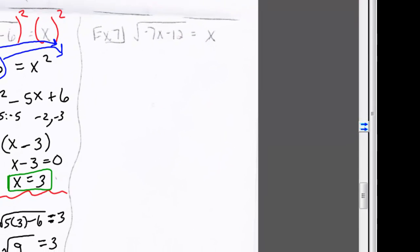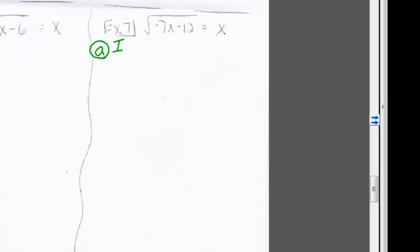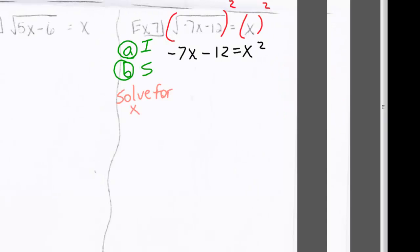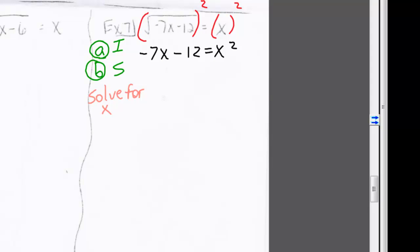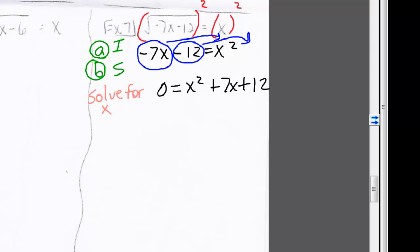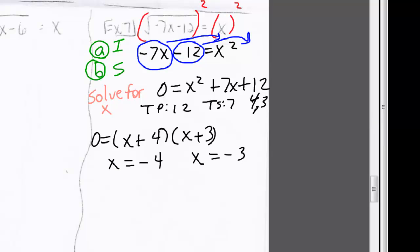Example 7. The radical is already isolated, so we square both sides, giving us negative 7x minus 12 equals x squared. Moving everything to one side gives 0 equals x squared plus 7x plus 12. Factoring: the target product is 12 and the target sum is 7. The two numbers that multiply to 12 and combine to 7 are 4 and 3. Solving gives x equals negative 4 and x equals negative 3.